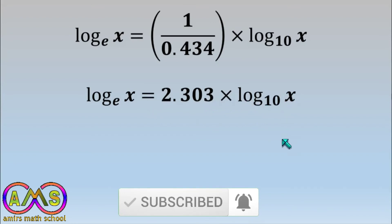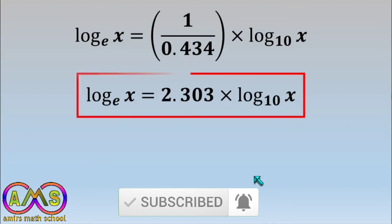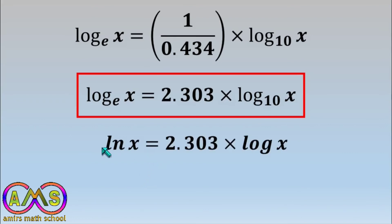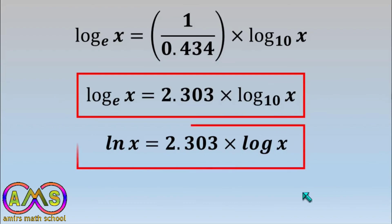This is the relation we wanted to find. Since 0.434 and 2.303 are both approximate values — because e is a transcendental and irrational number, the exact value cannot be found. If we write log base e of x as ln x, we get: ln x equals 2.303 times log x, where the base of the common logarithm is 10.